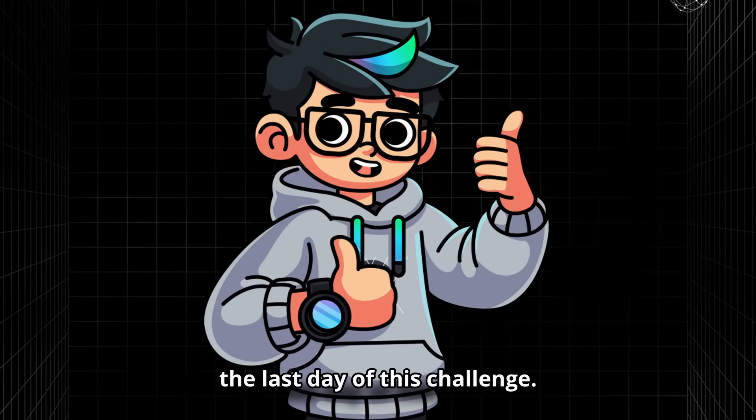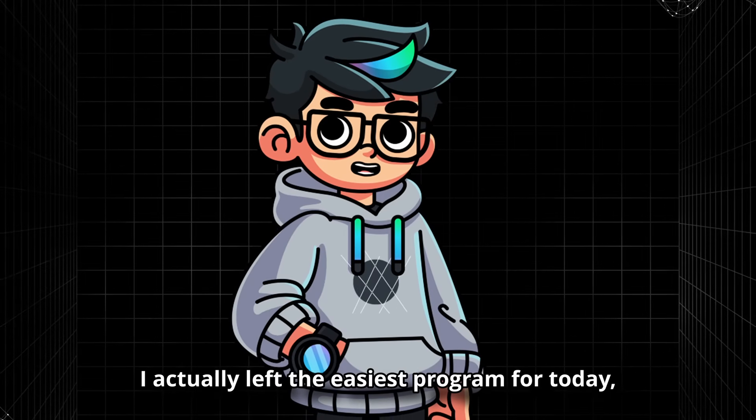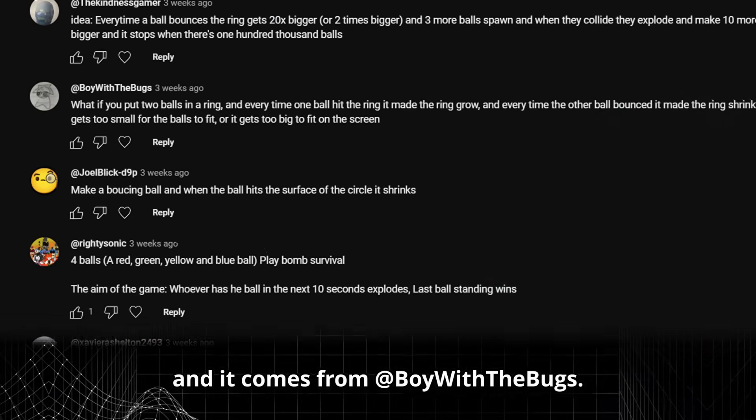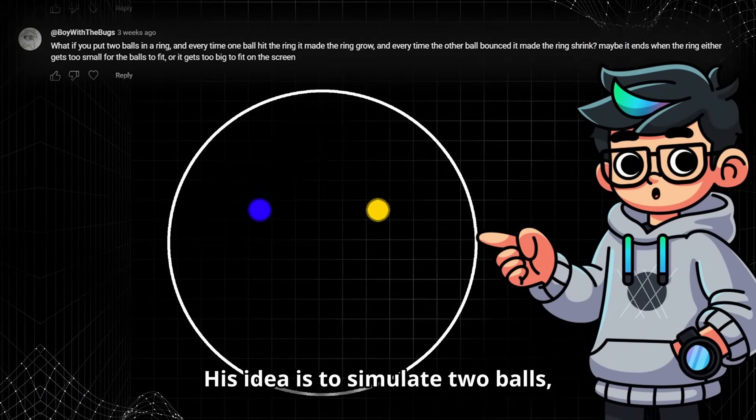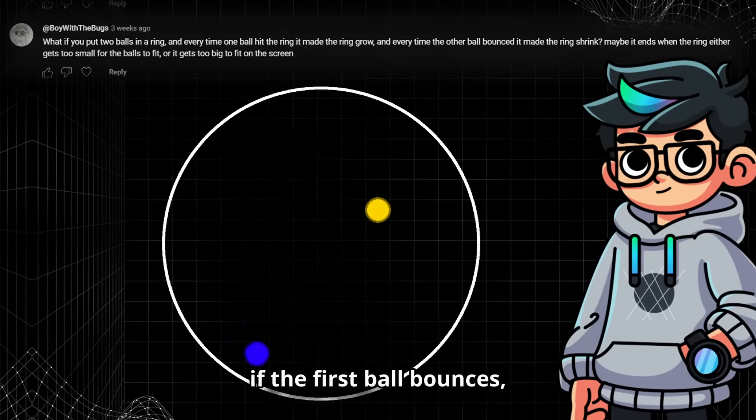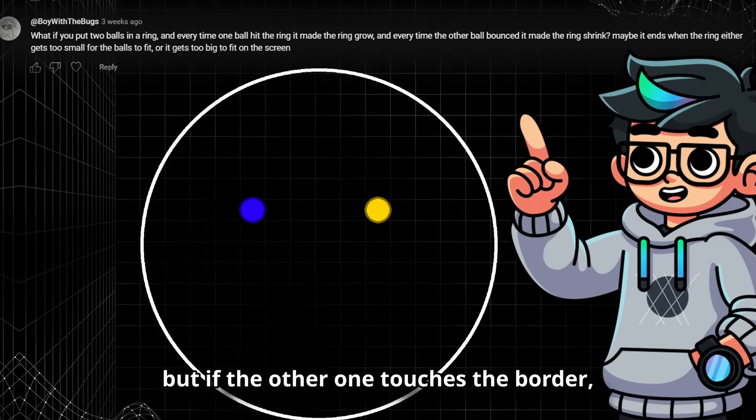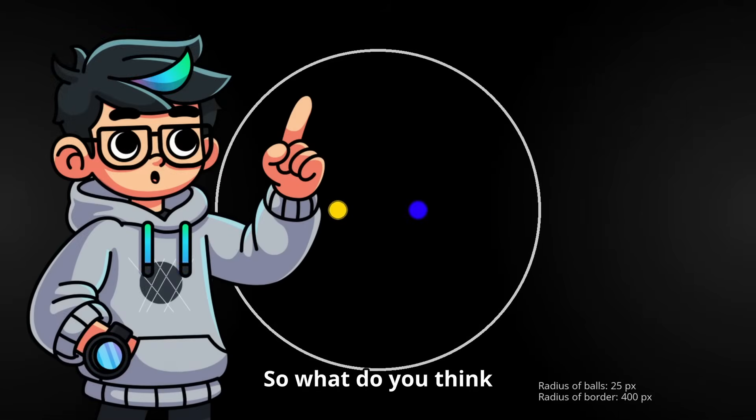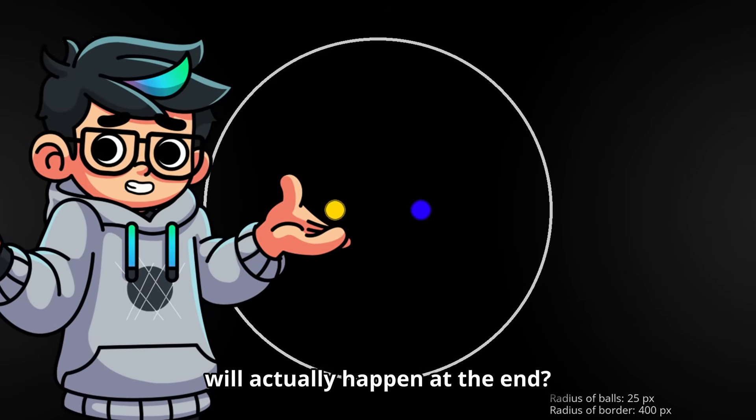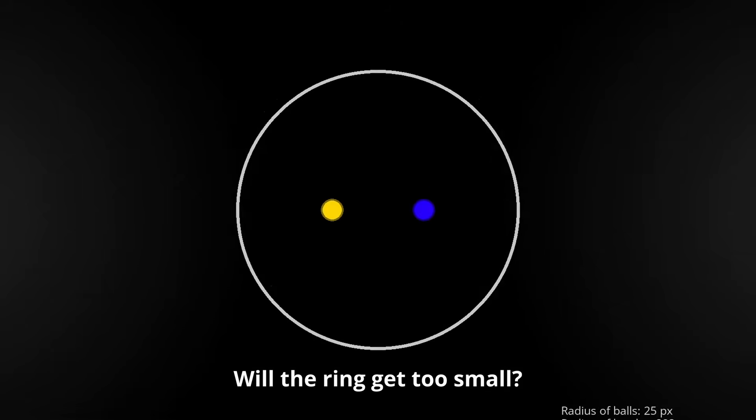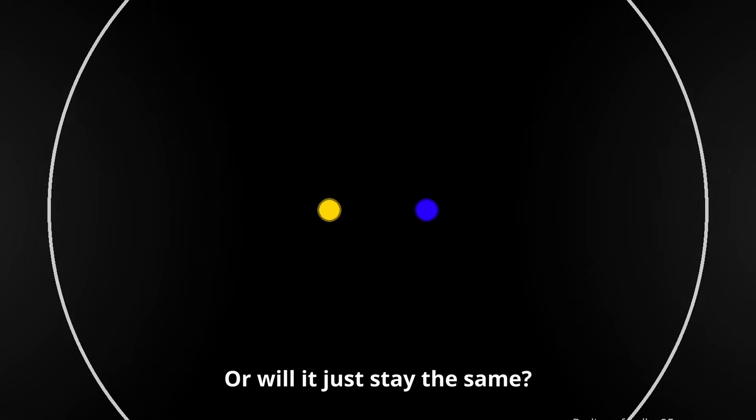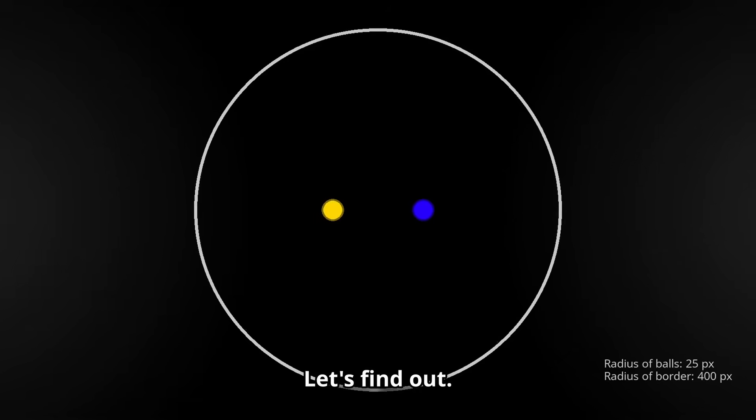Day 7, the last day of this challenge, I actually left the easiest program for today and it comes from Boy with the Bucks. His idea is to simulate two balls. If the first ball bounces, the ring grows, but if the other one touches the border, the border shrinks. So what do you think will actually happen at the end? Will the ring get too small? Will it grow forever or will it just stay the same? Let's find out.